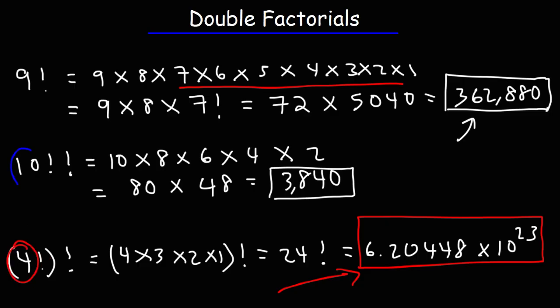Whereas, a double factorial gives you a relatively low value for a large number. So now you understand the difference between a single factorial, a double factorial, and an iterated factorial. Thanks for watching.